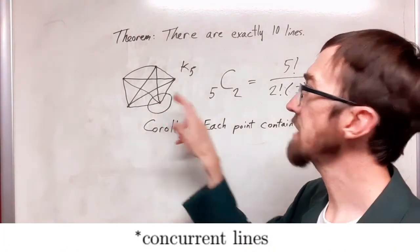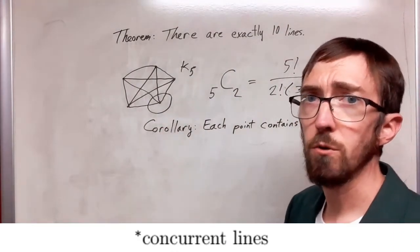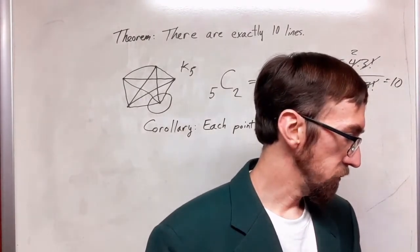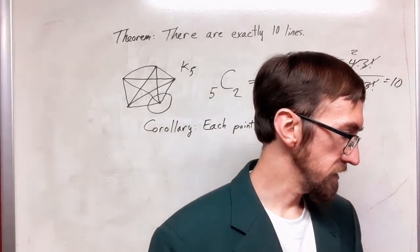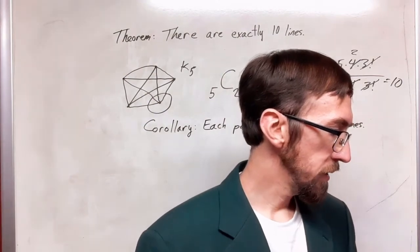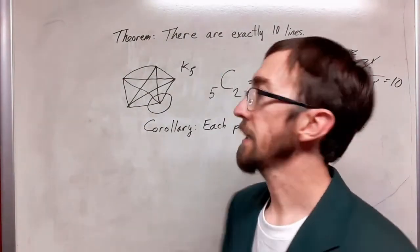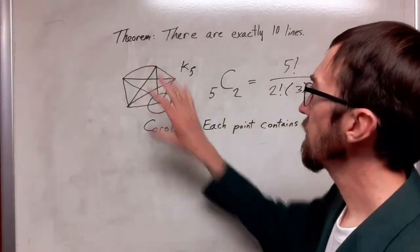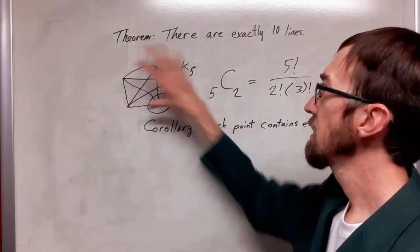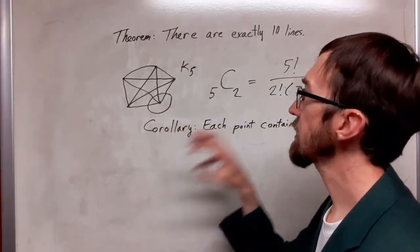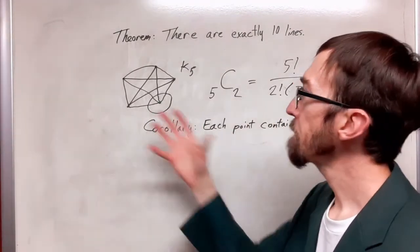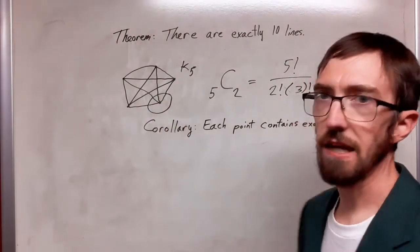And this is by postulate number 3, a line contains a pair of points and postulate 2 again says that every pair of distinct points is on exactly one line. So being that we have a finite geometry, we can, by brute force, give a very nice description or a diagram that shows our entire geometric space here and we can see that locally this is exactly what happens.